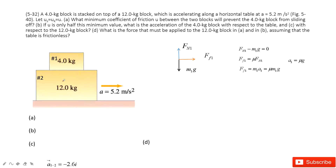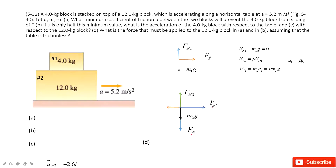Now let's look at box number two. For number two, we have gravity, normal force, and tension. The normal force Fn1 is from number two supporting number one. By Newton's third law, number one also acts a force on number two pressing it down — also Fn1. We also have the normal force from the table Fn2, the applied force from the person, and friction.